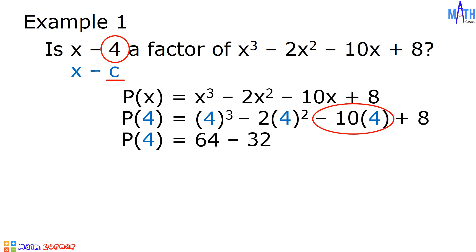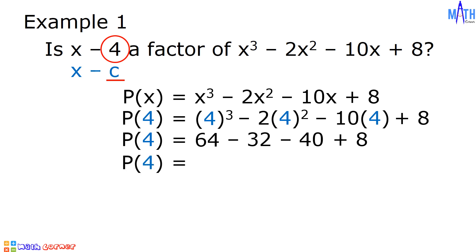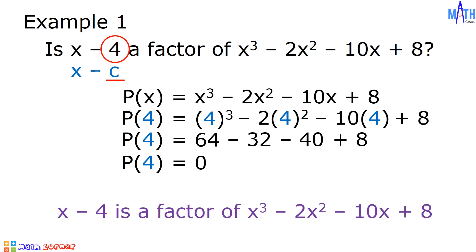Next, negative 10 times 4 is equal to negative 40, plus 8. And we have p of 4 is equal to 64 minus 32 minus 40 plus 8, which is equal to 0. And since p of 4 is equal to 0, x minus 4 is a factor of x cubed minus 2x squared minus 10x plus 8.